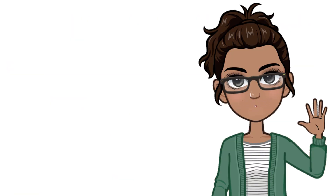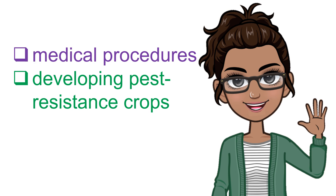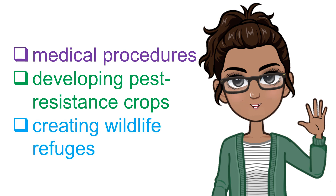In the previous module, you gained understanding on the different unifying themes of life, from simple to complex structures of life forms, especially that of human beings. One of the prominent themes is biology and society. Due to changes and technological advancement, people have been using biology to perform medical procedures, developing pest-resistant crops, and creating wildlife refuges where animals and other species can be protected and studied.